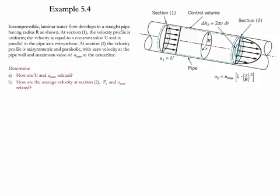At section 2, the velocity profile is axisymmetric and parabolic. The formula is given by this equation, with zero velocity at the pipe wall and maximum value at the center equal to u_max.